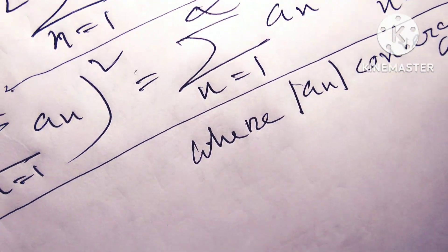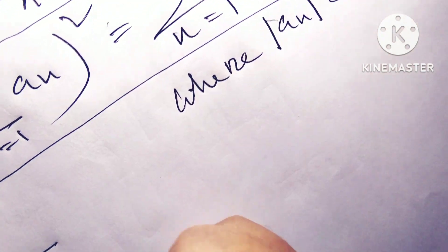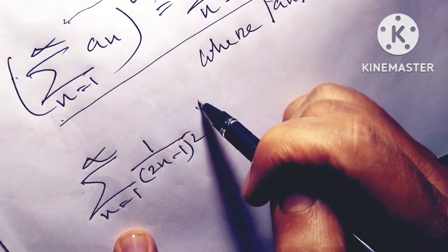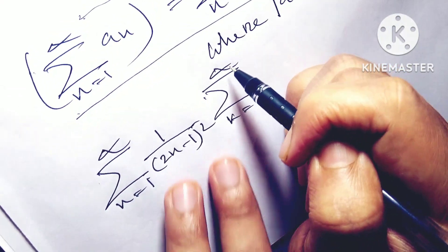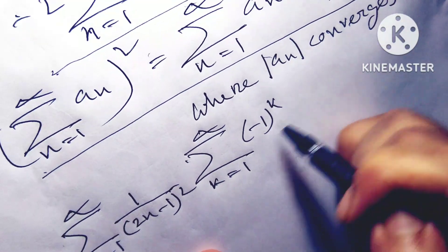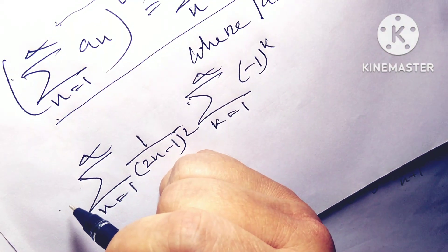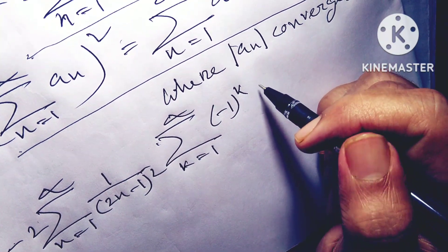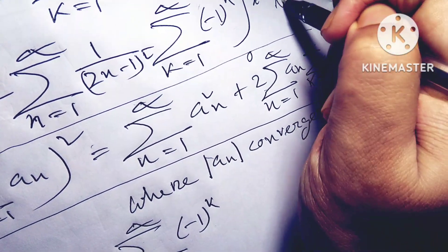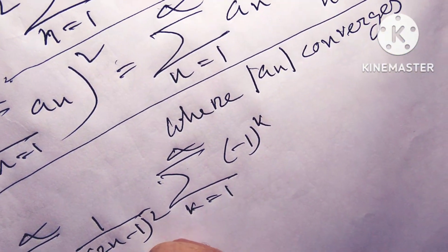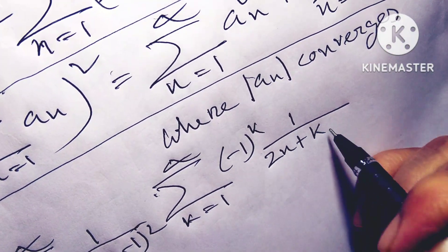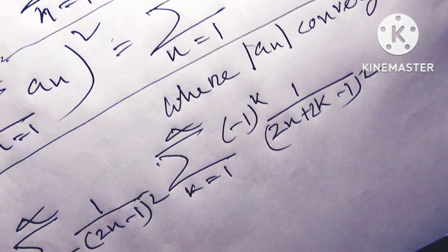This problem will become: summation n=1 to infinity of 1/(2n-1)² times (-1)^k, and after multiplying by minus 2, plus summation of 1/(2n+2k-1)² — okay friends, I hope that is clear.